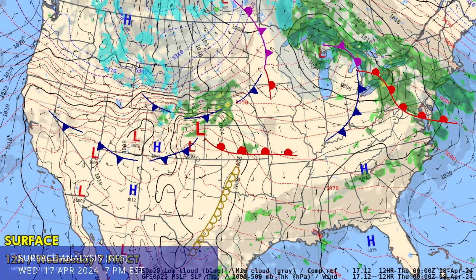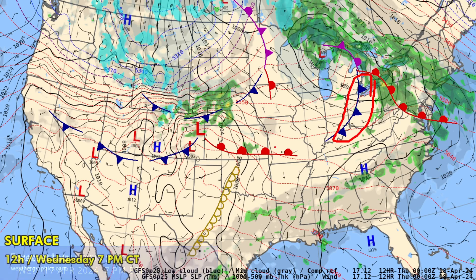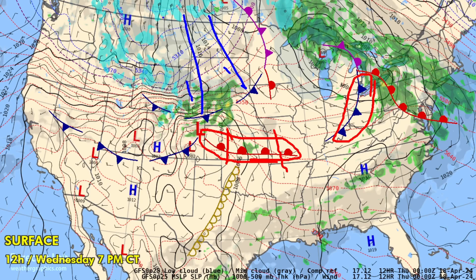The surface chart this afternoon shows a couple of frontal boundaries. A cold front is moving through Detroit, Findlay, and Cincinnati this evening, and a warm front is moving north through Wichita and Springfield, with a strong blast of cold air coming out of the Dakotas and Wyoming.